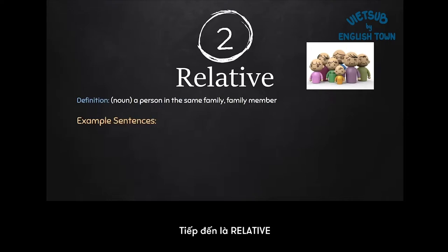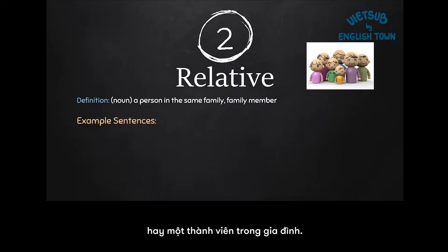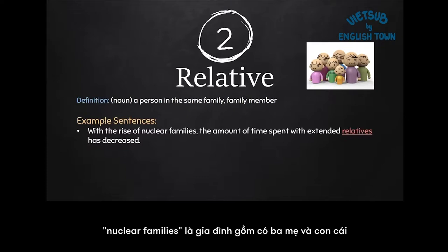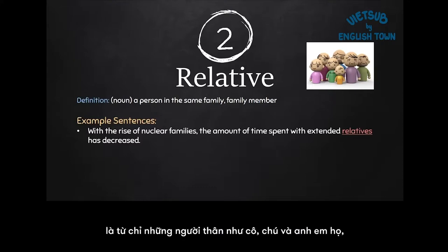Next is relative. A relative is a person in the same family, or a family member. With the rise of nuclear families, the amount of time spent with extended relatives has decreased. Nuclear families are like the parents and the children, and extended relatives would be relatives like aunts, uncles, cousins, and maybe grandparents.